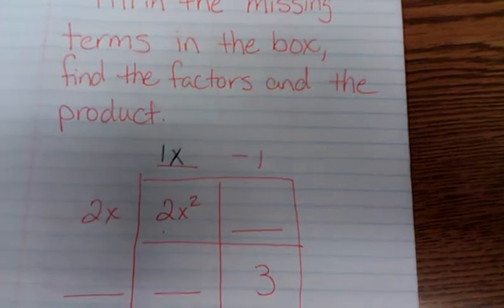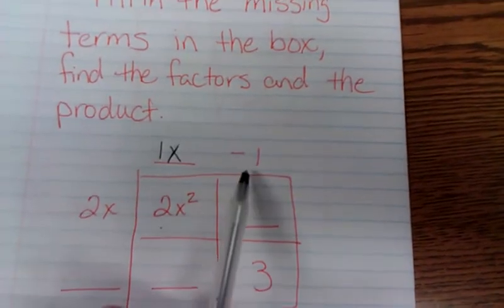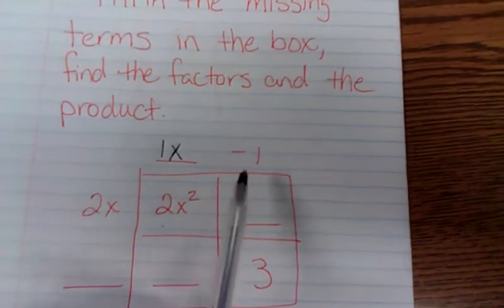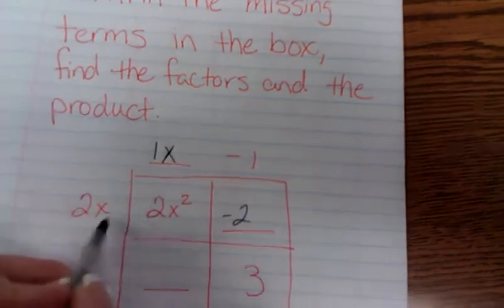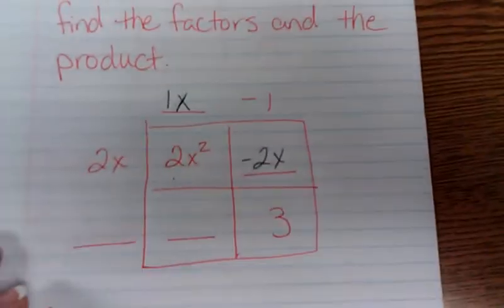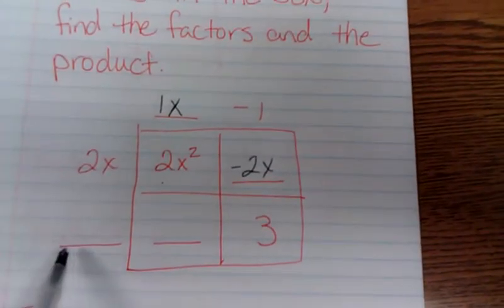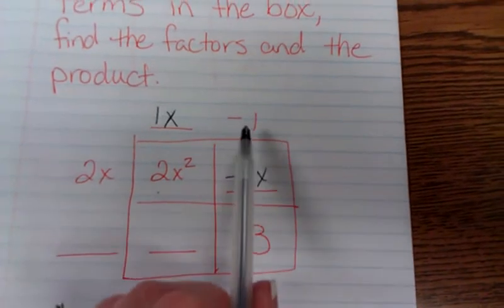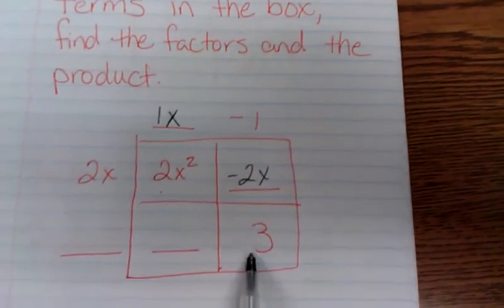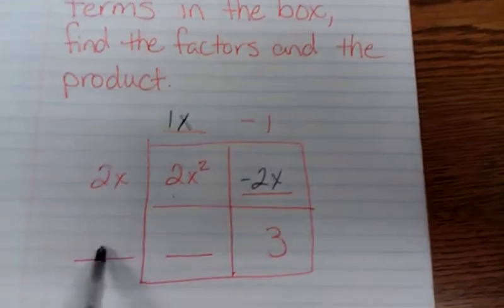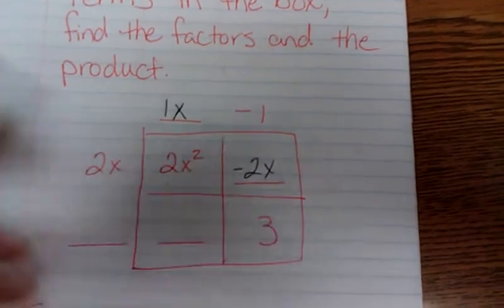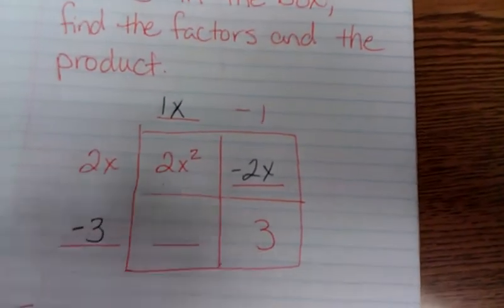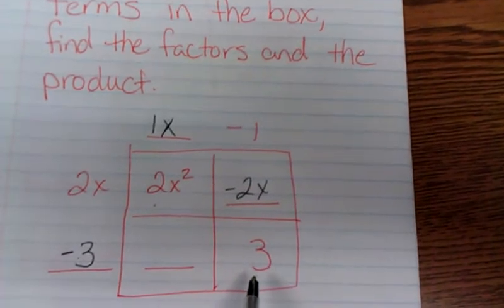Now I wouldn't normally write the 1x, I'd just write an x. Negative 2 times, I'm sorry, 2 times negative 1 is negative 2x. 1 times what, well I don't have these two blanks, so I have to look here. For this square right here, negative 1 times what gives me 3? Well, that's a negative 3, because negative 1 times negative 3 gives me a positive 3.